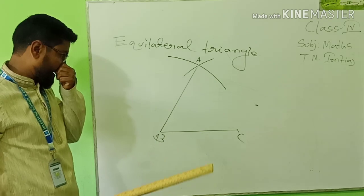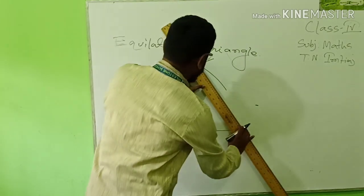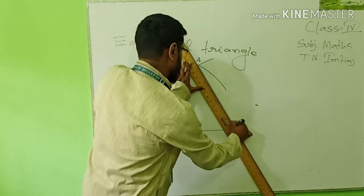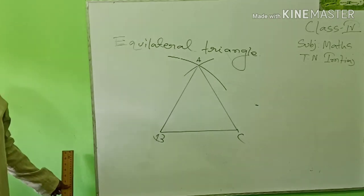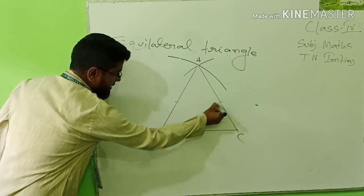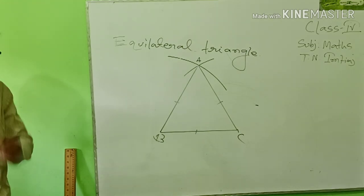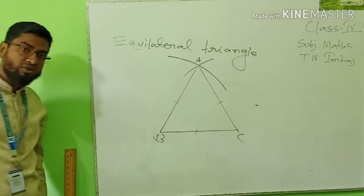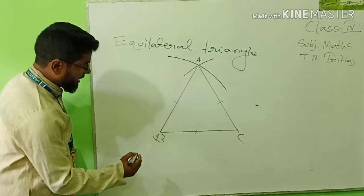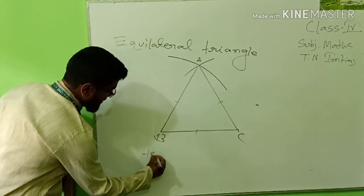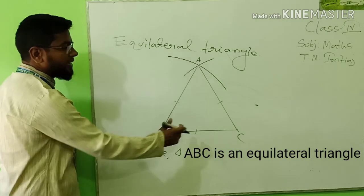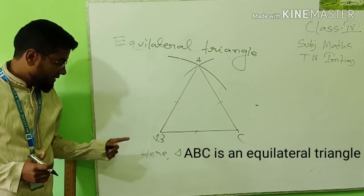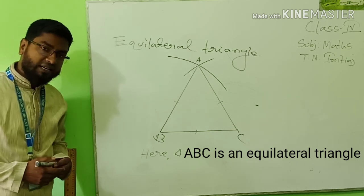This is side AB — I have joined it. Now again I will join A and C. It becomes an equilateral triangle. This side, this side, this side — all sides are equal, that is why it is equilateral. Another important note: all angles are also equal. Triangle ABC is an equilateral triangle.